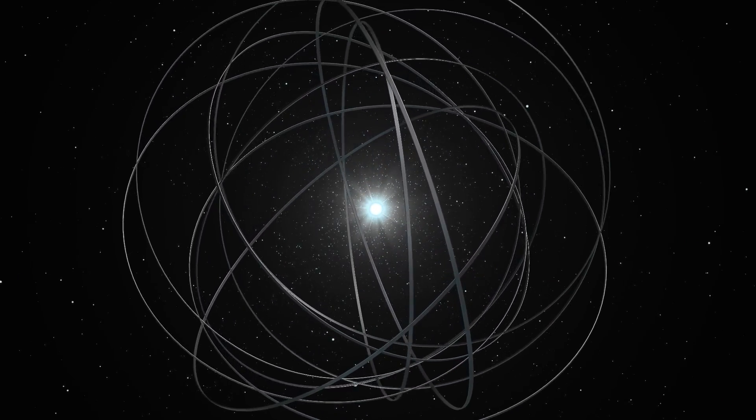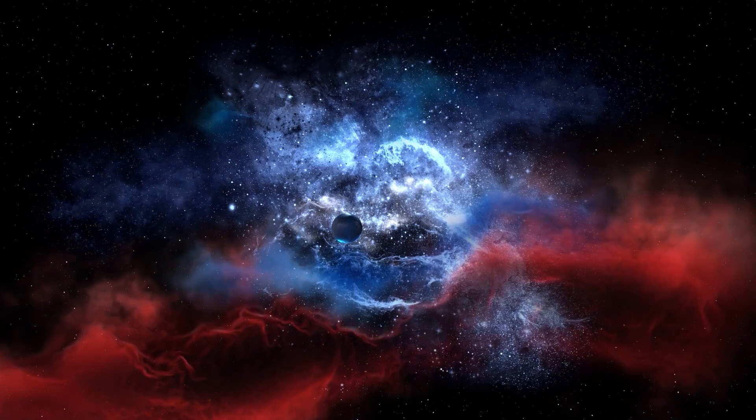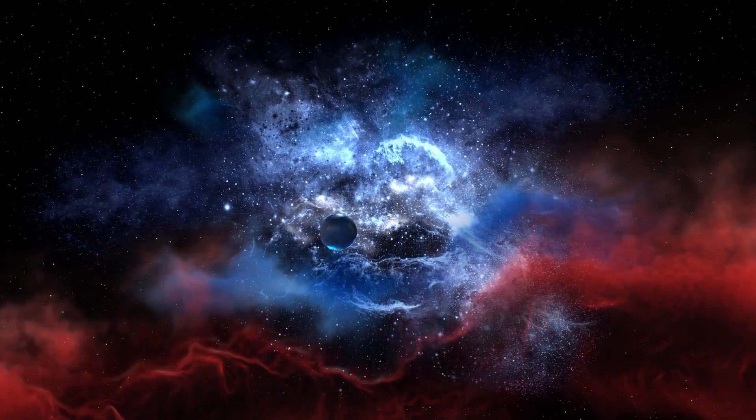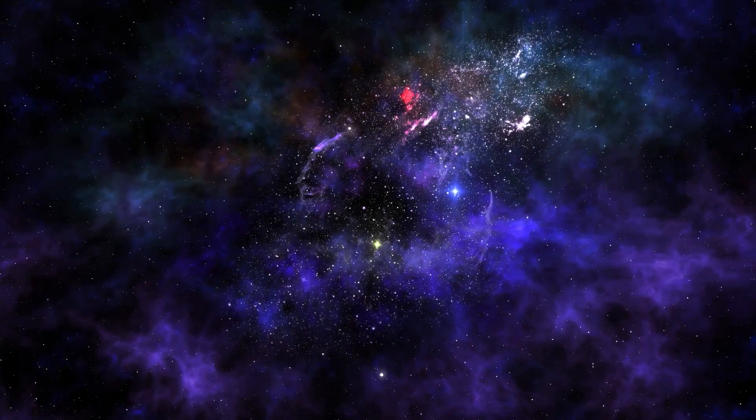In more extreme versions, such as the Dyson sphere, the cosmic habitat collected all the light emitted by the star. One solar system, even without habitable planets, could accommodate several trillion people.